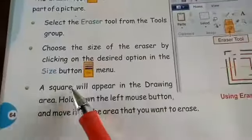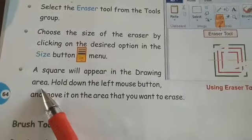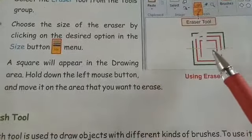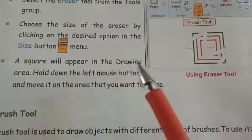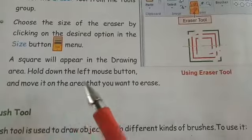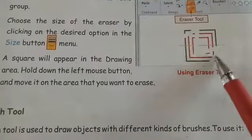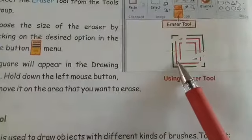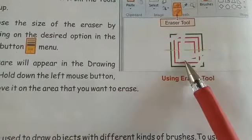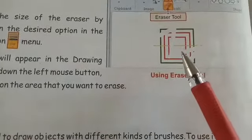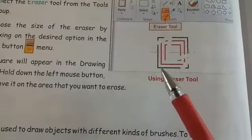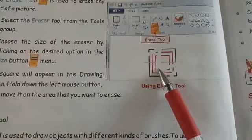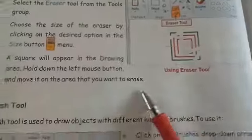A square will appear in the drawing area after selecting the eraser tool. You will get this square shape in the drawing area. Hold down the left mouse button and move it on the area that you want to erase — drag your mouse by holding the left mouse button.